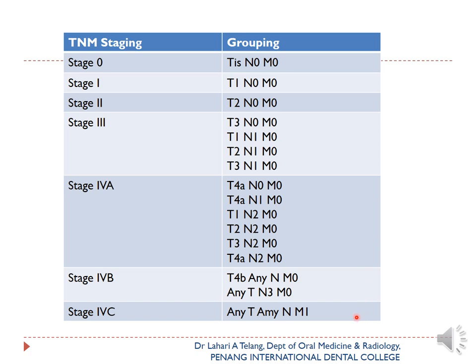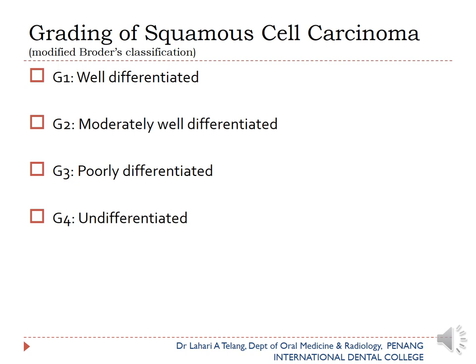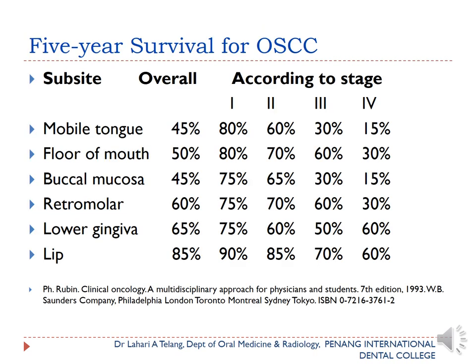The histopathological grading of squamous cell carcinoma, based on the Broder's classification, is separate from staging. G1 is well differentiated, G2 is moderately differentiated, G3 is poorly differentiated, and G4 is undifferentiated. A well-differentiated squamous cell carcinoma has a better prognosis than a poorly differentiated one.